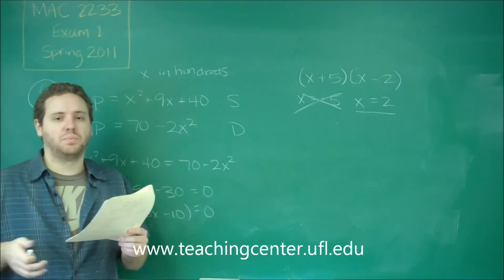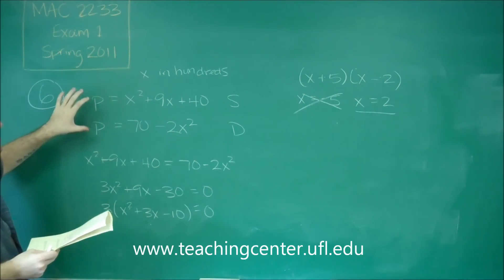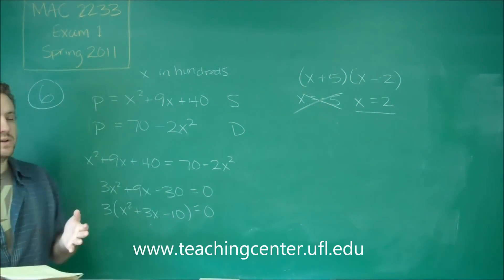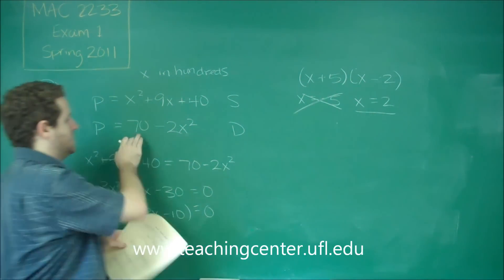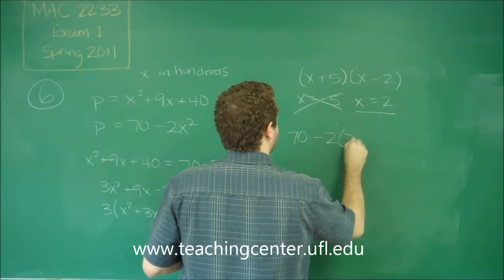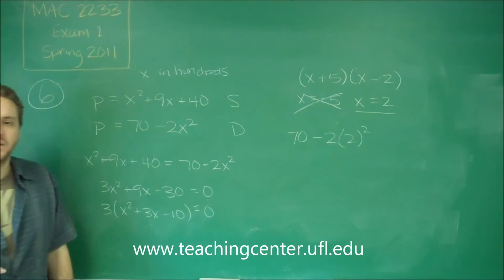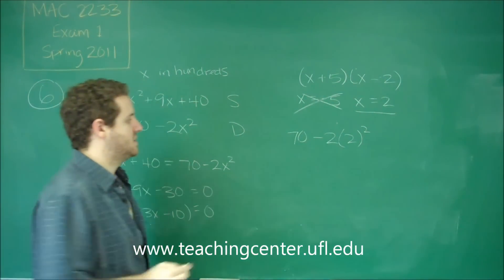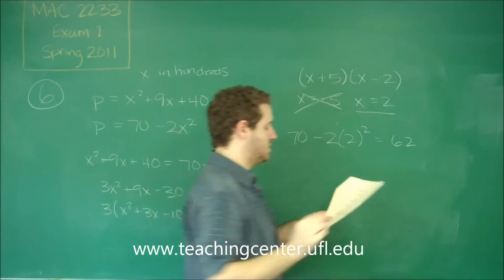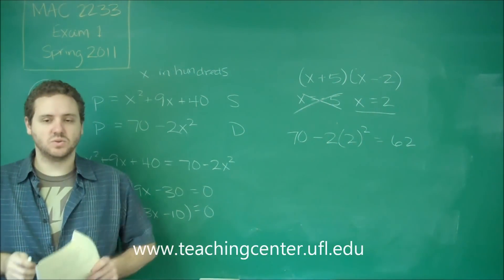Lastly, we just need the actual price. Both equations give you the price, so you can plug x equals 2 back into either equation. Using the demand function: 70 minus 2 times 2 squared equals 70 minus 8, which gives us 62 for our price. That corresponds to answer choice B.